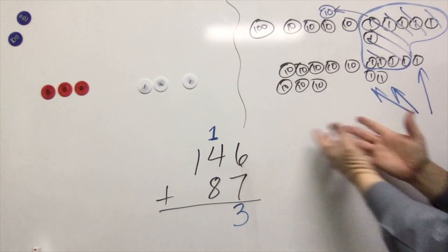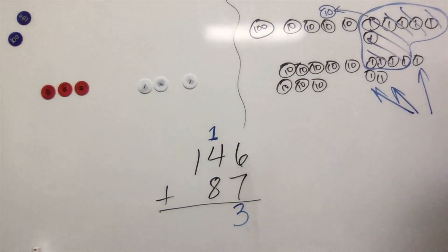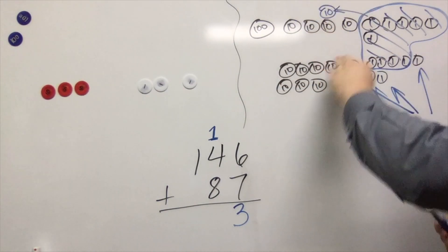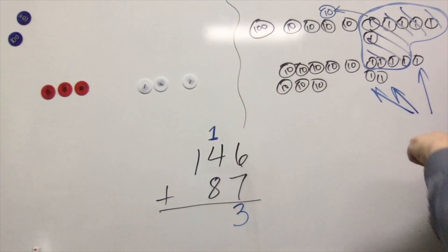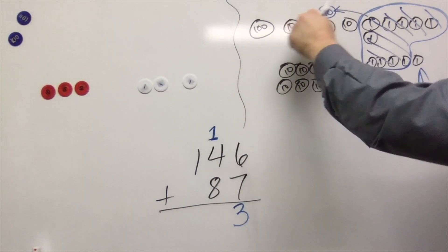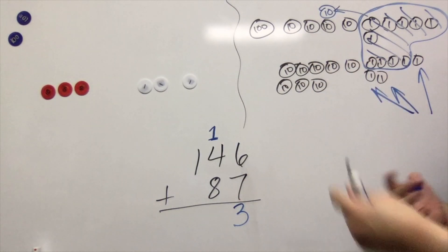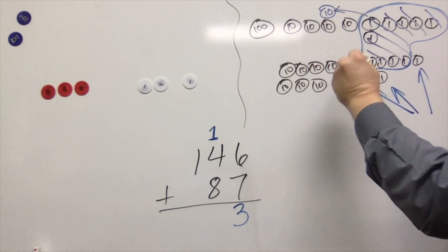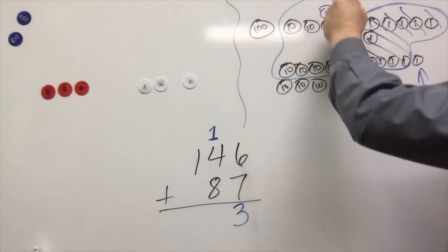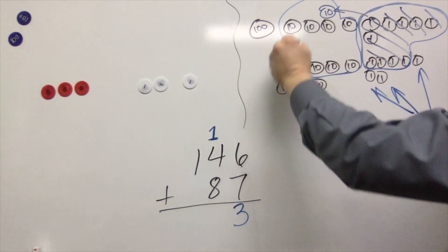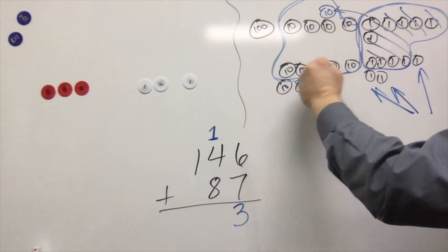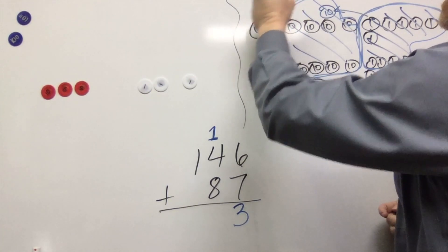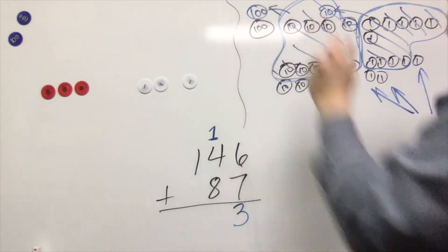So what is that going to look like over here in our representational stage? We're going to count up 10 tens, circle them, and give ourselves a brand new hundred. One, two, three, four, five, six, seven, eight, nine, ten — these 10 tens get cashed in and give us a brand new hundred right there.